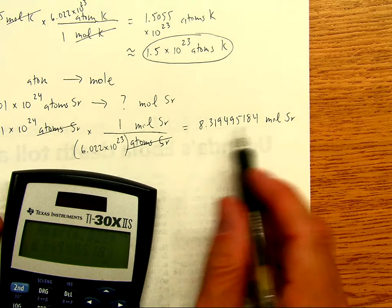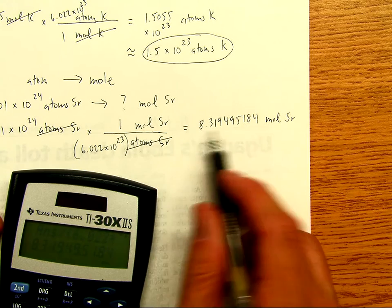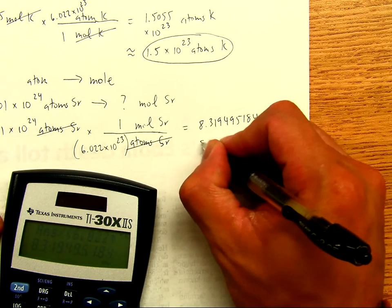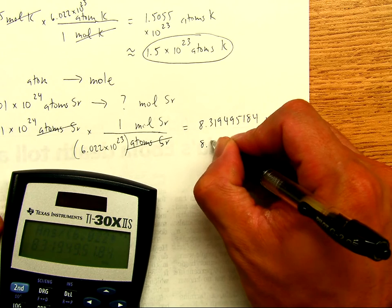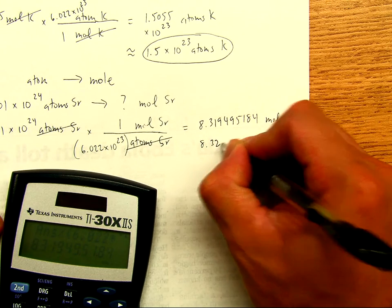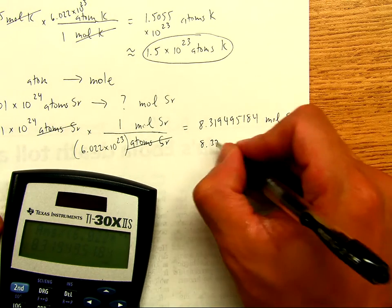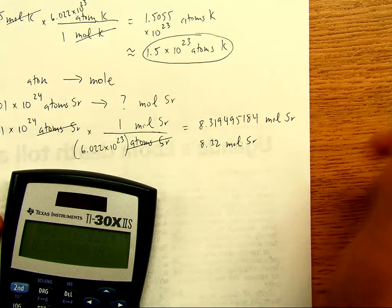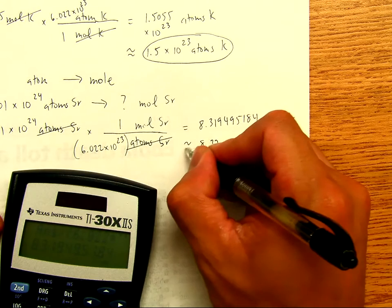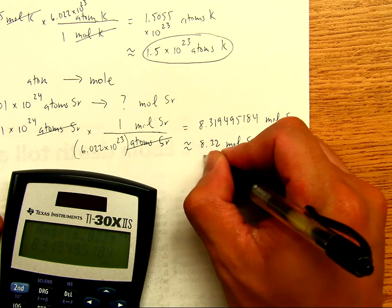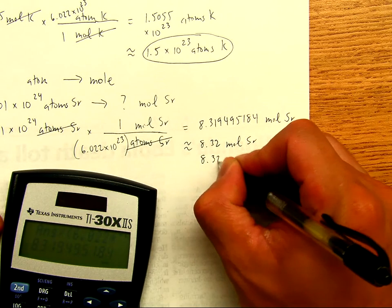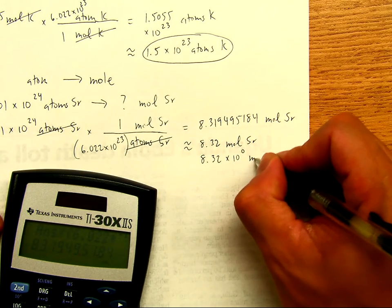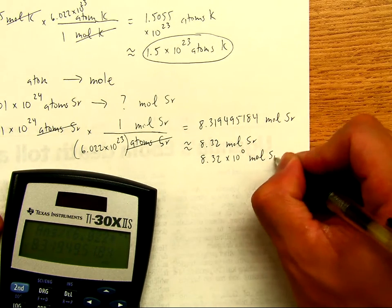But we don't need all of those digits, we just want 3 sig figs. So we round this to 3 sig figs, it'll be 8.32. The 9 rounds it up to a 2. 8.32 mole of strontium. If your teacher wants this in scientific notation, then we'll write 8.32 times 10 to the 0, because that's the same as 1 mole of strontium. Okay, circling answer.